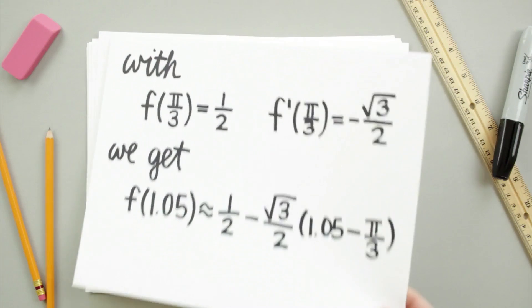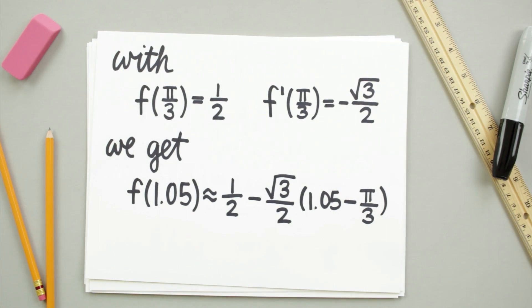Now we can simply plug what we found into the formula for linear approximation, and we get the linear approximation f of 1.05 is about equal to 1 half minus root 3 over 2 times 1.05 minus pi over 3. And this gives us approximately 0.4976.